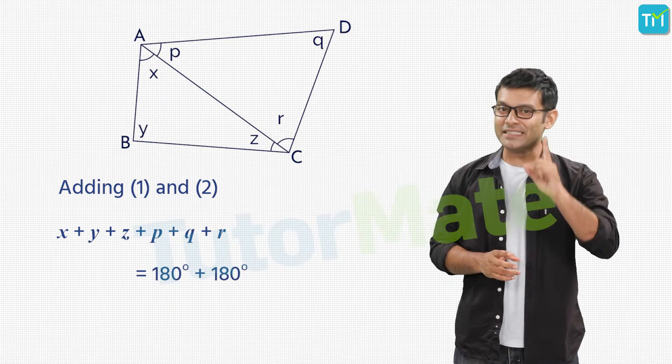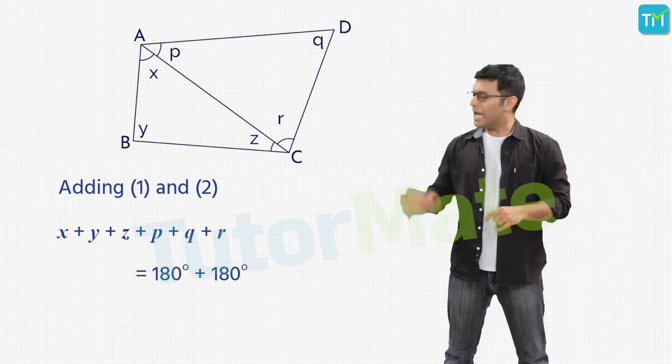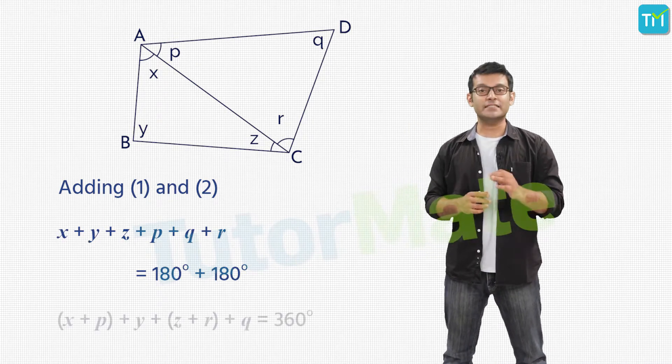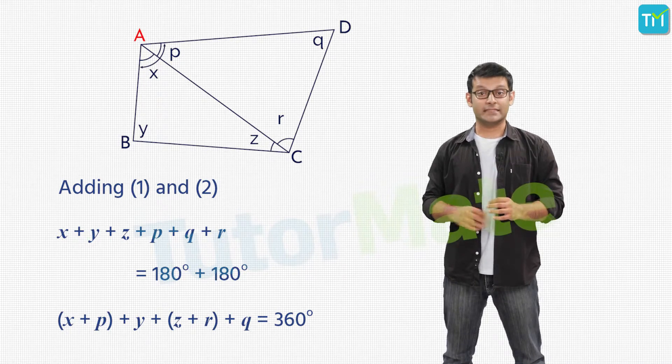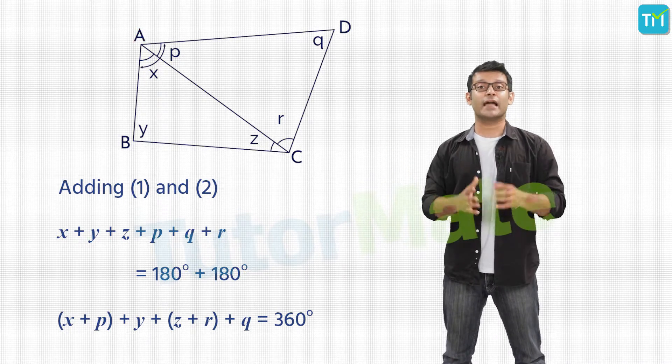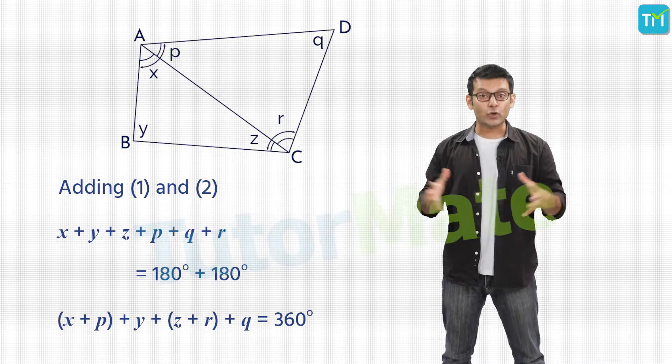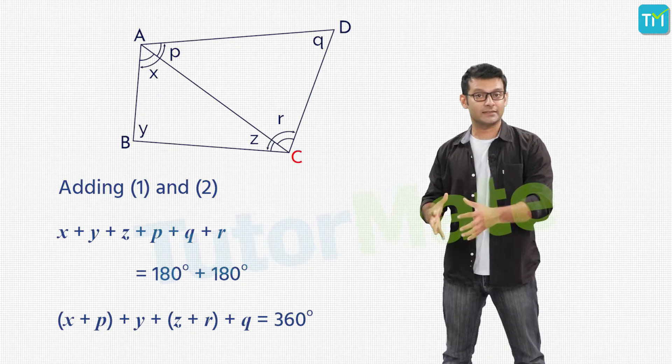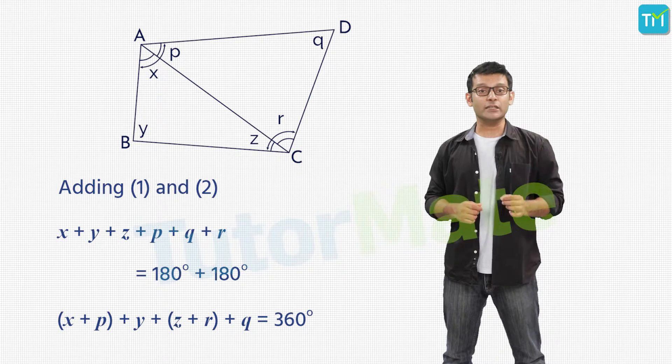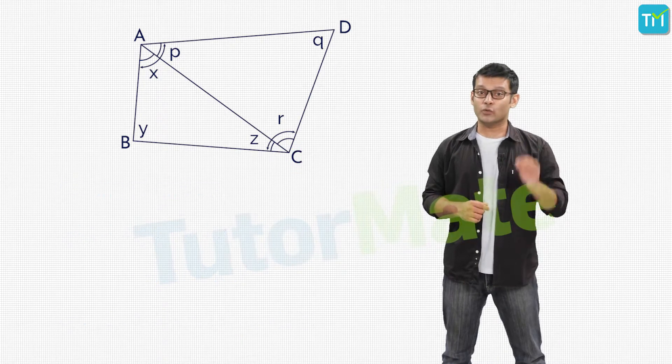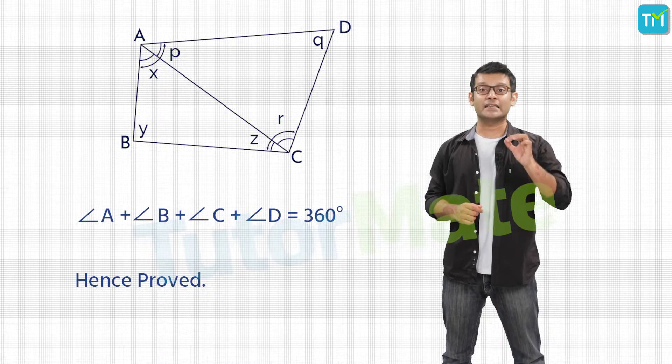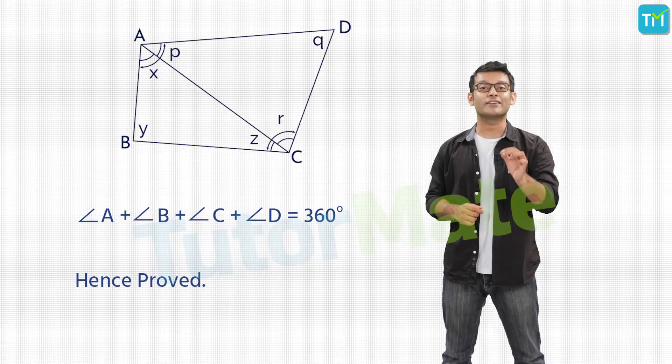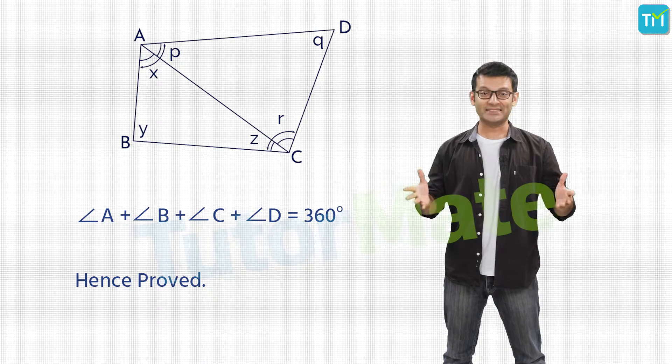Now, let's take a look at the diagram. As we can see, if we take together angles X and P, they make angle A. And similarly, if we take together angles Z and R, they join together to make angle C. So now, if we take a look at the equation again, we get angle A plus angle B plus angle C plus angle D which is equal to 360 degrees. Hence, proved.